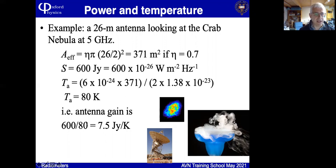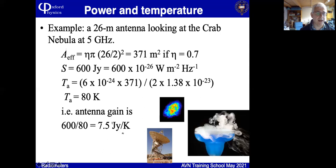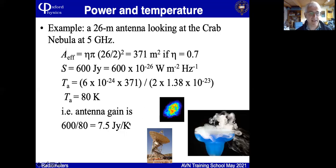The power from the antenna pointed at the Crab Nebula is roughly the same as you'd get from a 50-ohm resistor dipped in liquid nitrogen. In fact, when testing or calibrating a radio telescope you may actually take a physical resistor, dip it into liquid nitrogen, connect it to your receiver, and confirm you get a signal at about the same level as from the Crab Nebula. This gives us the antenna gain: a 7.5 Jansky source gives an antenna temperature of 1 Kelvin.